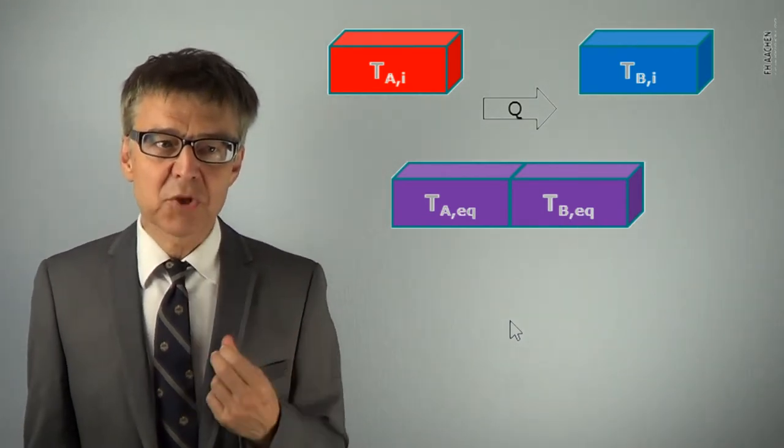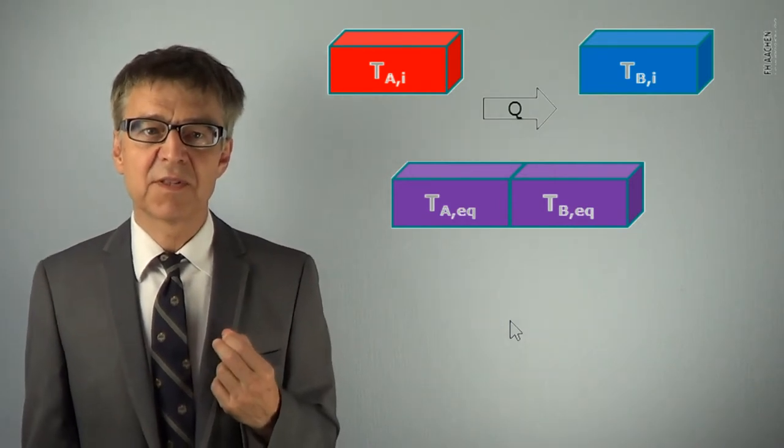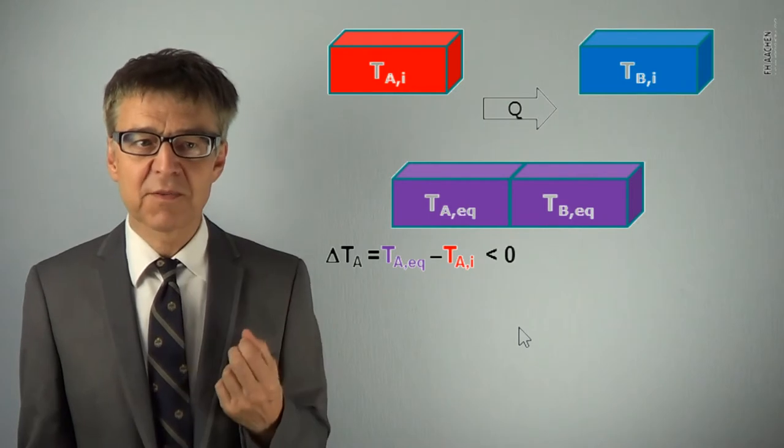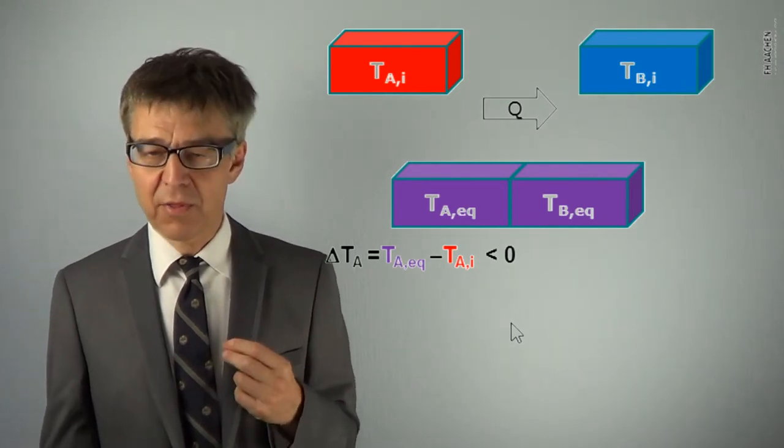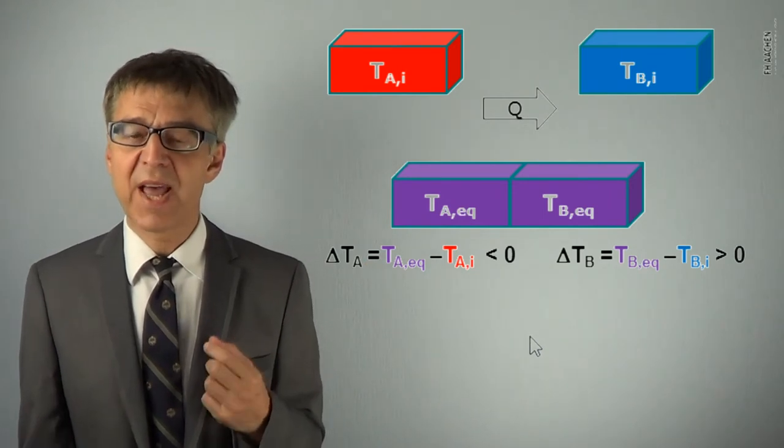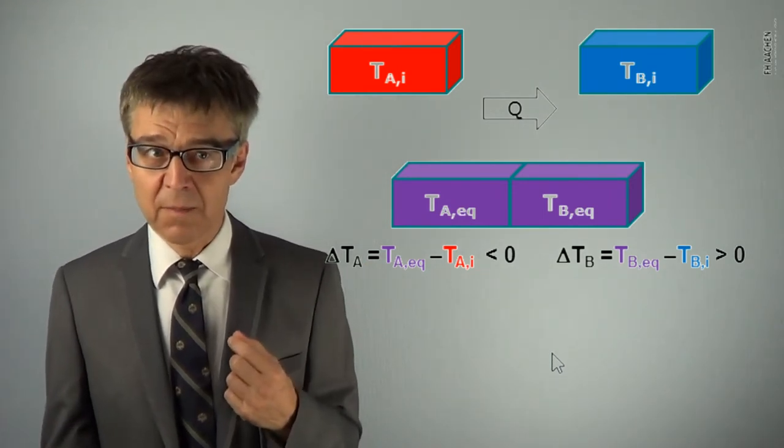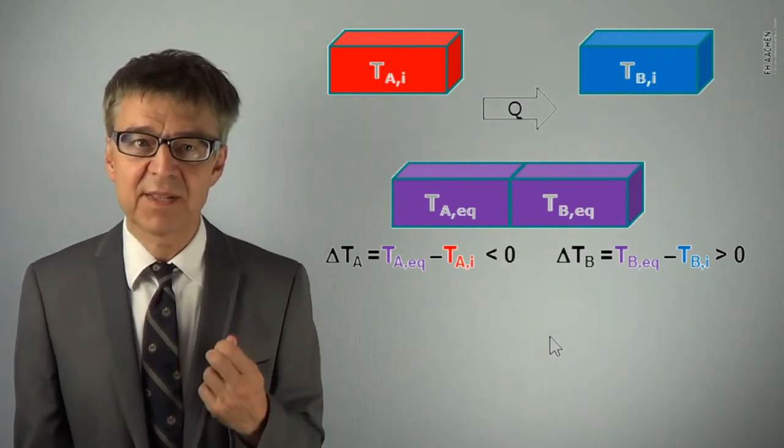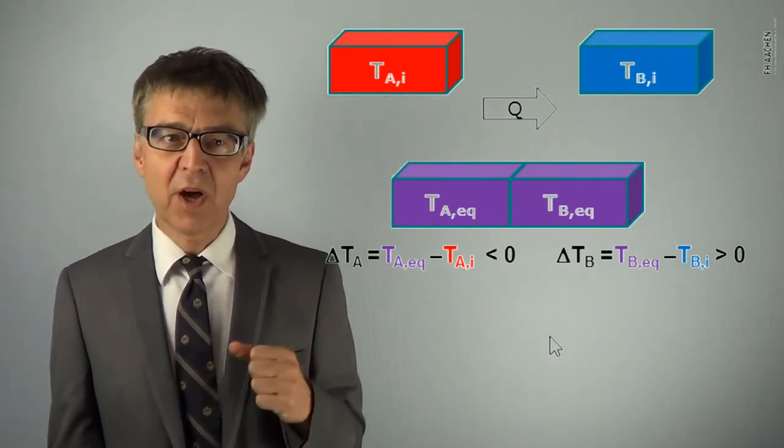The change in temperature delta T for system A is negative. The process for system A has been exothermic. For system B the process was endothermic. The temperature changes delta T sub A and delta T sub B will generally not be equal.